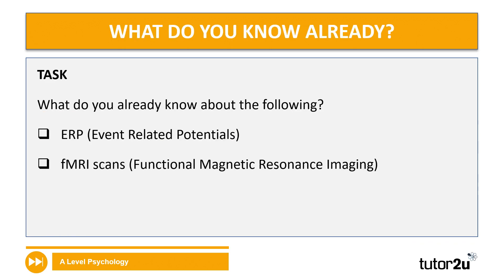So let's see what you know already. Think about ERPs — event related potentials — and fMRI scans, functional magnetic resonance imaging. What do you know already? Have you seen these referenced anywhere in your books or your resources? Maybe you've even spoken about them in class already. Pause the video for two minutes while you jot down anything you can remember.